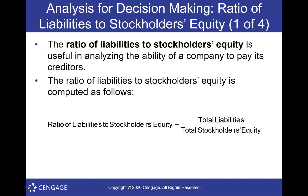So if our debt is higher than our total stockholders' equity, then our ratio of liabilities to stockholders' equity will be greater than one. And if our debt is lower than our stockholders' equity, then it will be less than one. So this is one of those ratios where being smaller is better — being less than one means you have less debt relative to your equity. For now, just be able to calculate it, and as we work with them more, they'll make more sense.